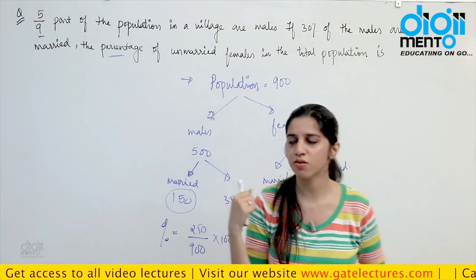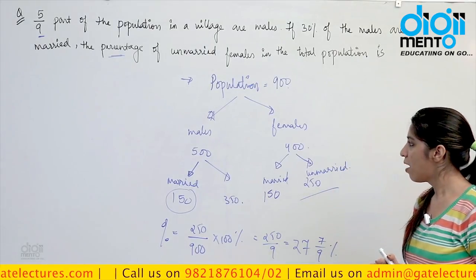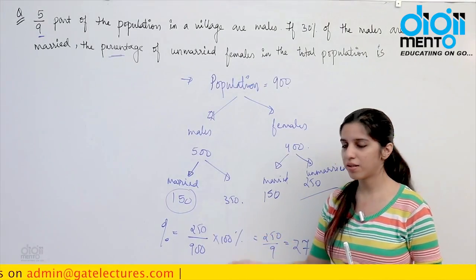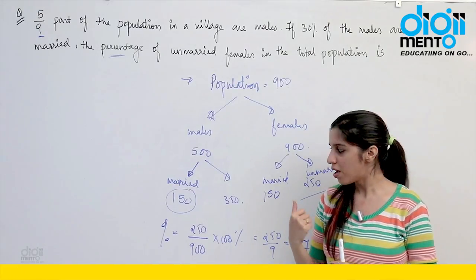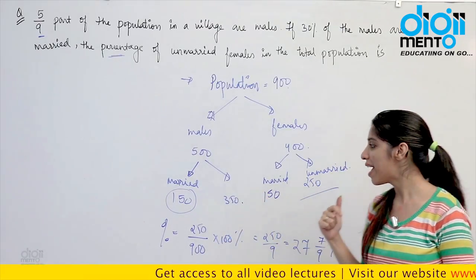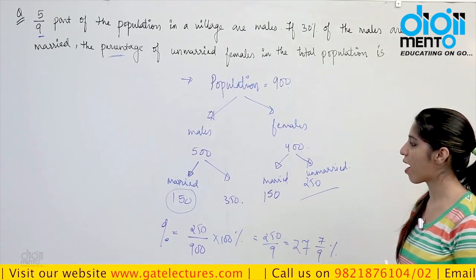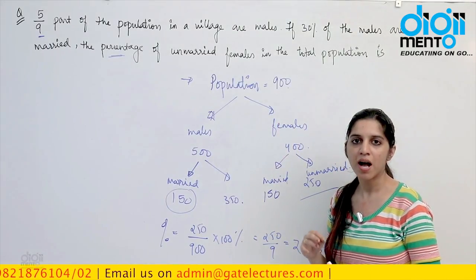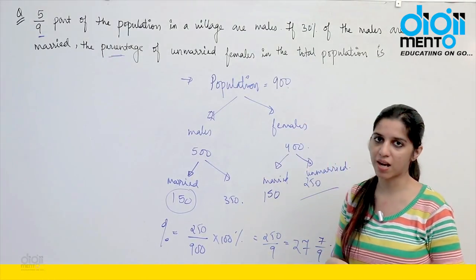There is another approach — consider total population as x, find 5/9 x, subtract, etc. But using assumed values is easier because you get real numbers, so calculation mistakes are less likely and calculation becomes fast. I recommend: whenever the answer is required in percentage, assume a number that simplifies your calculation — 100 is not always the must; assume a number that makes things easy.